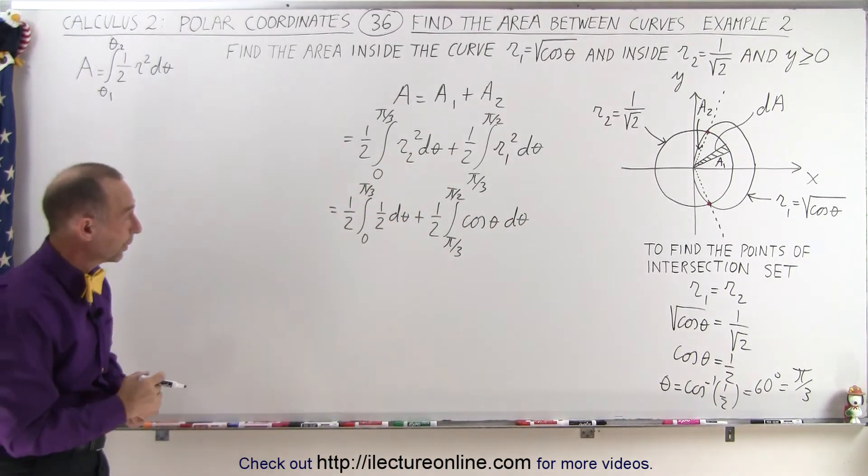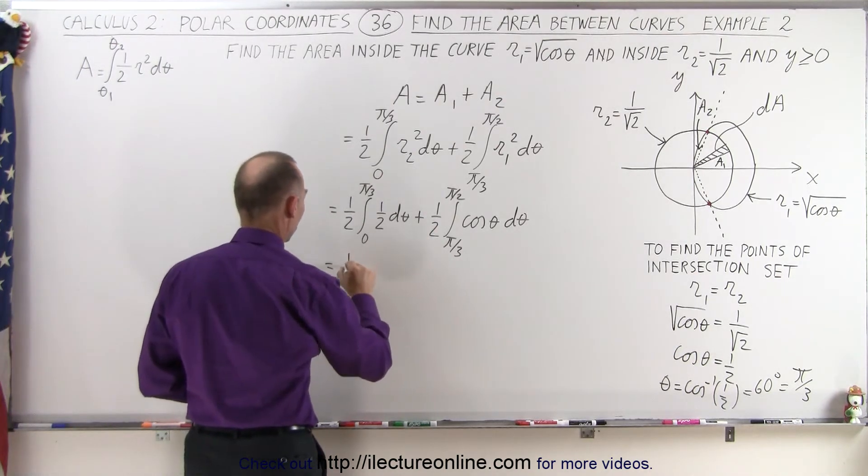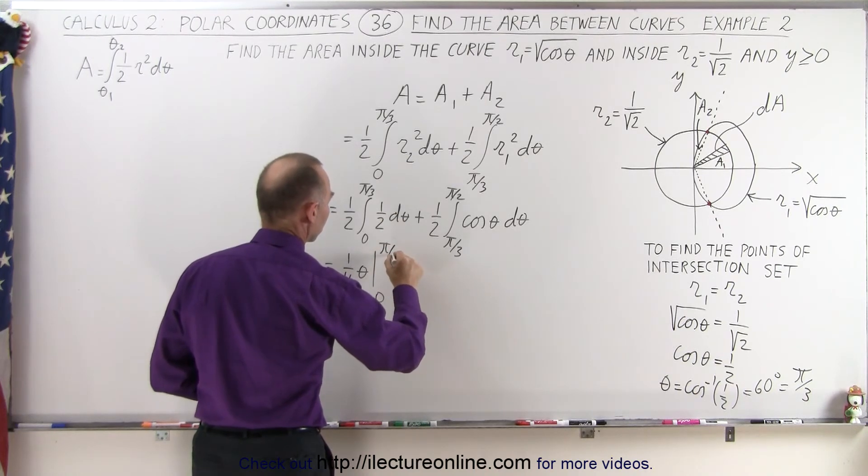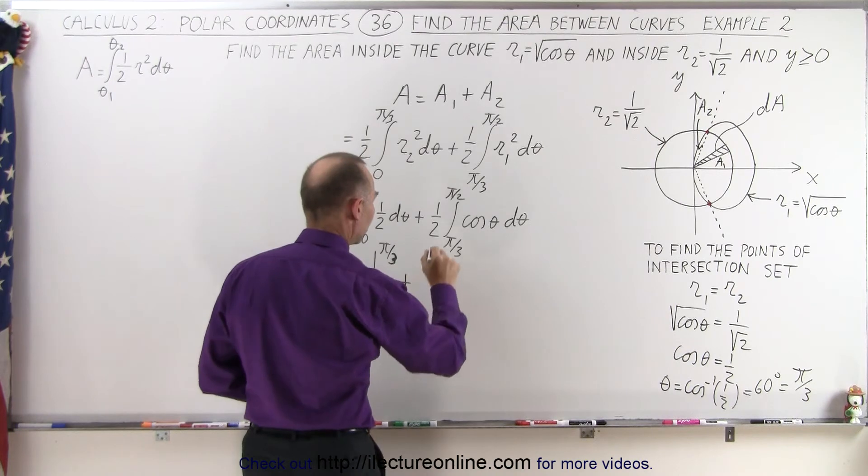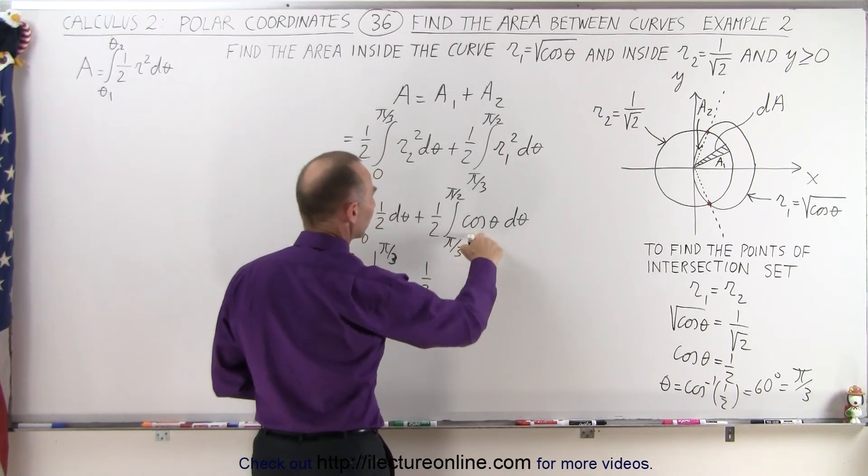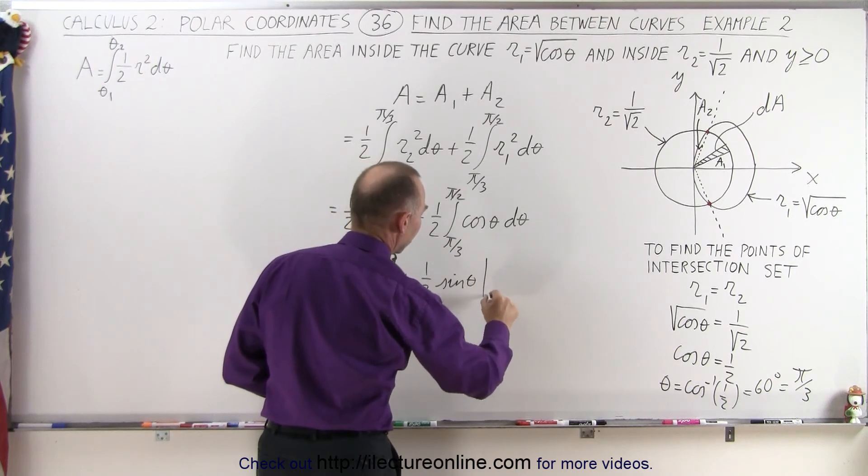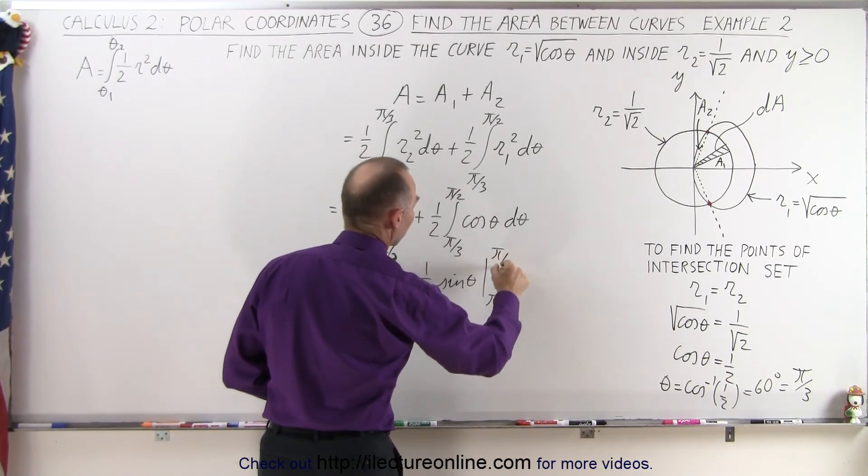So now we can go ahead and do the two integrals. So this becomes equal to 1 quarter times theta from 0 to pi over 3. It should be a 3 right there. And plus 1 half, the integral of the cosine is the sine of theta evaluated from pi thirds to pi over 2.